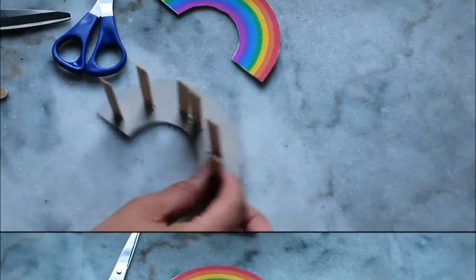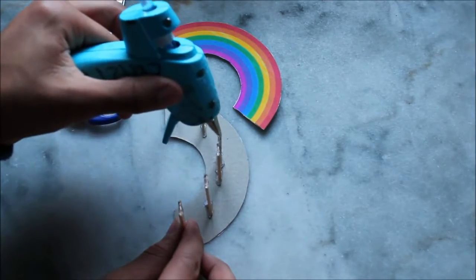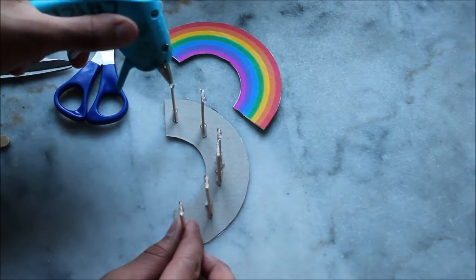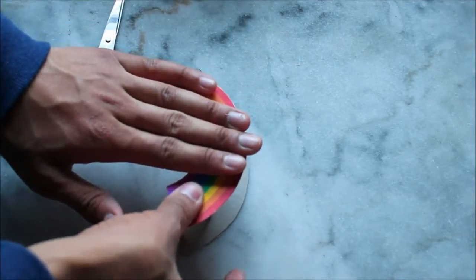After all your popsicle sticks are glued on in the rainbow pattern, you're going to put a bit of glue on the other ends of the sticks and apply the other half of the rainbow with a little bit of pressure.